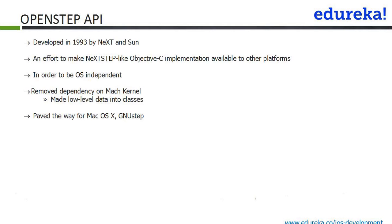The OpenStep API was developed in 1993 by both NeXT and Sun. The idea was to make NeXTSTEP and its Objective-C implementation available to other platforms. To be OS-independent, they separated the higher-level libraries from the core OS, removing the dependency on the Mac kernel. They made the low-level data into classes, so the classes and the API came out from the operating system and became OS-independent. This paved the way for Mac OS X and GNU Step, which took different directions — one from Apple and one from GNU.